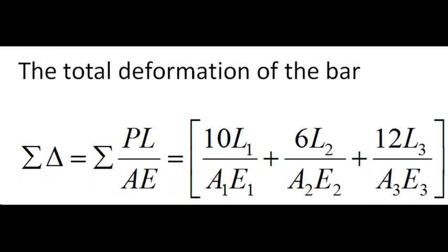With reference to the bar which is made of different material, the total deformation or the total contraction or the total elongation of that particular bar will be equivalent to delta, that is equivalent to 10L1 by A1E1 plus 6L2 by A2E2 plus 12L3 by A3E3 for that particular example.